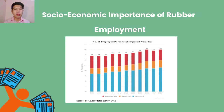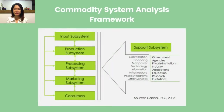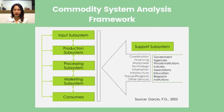In terms of socioeconomic importance, the rubber industry provides employment to thousands of Filipinos, helping alleviate the unemployment rate of the country. In 2018, more than 40,000 Filipinos were employed in the Philippine Rubber Industries Association. In analyzing the status of natural rubber in the country, the group utilized the commodity system analysis framework, which consists of input, production, processing, marketing, and support subsystems.